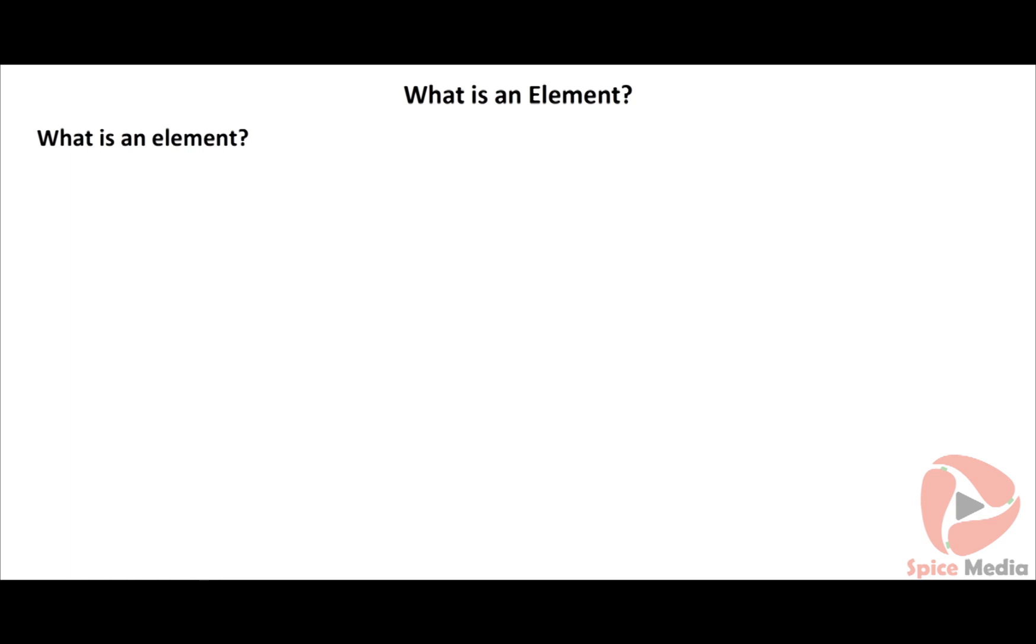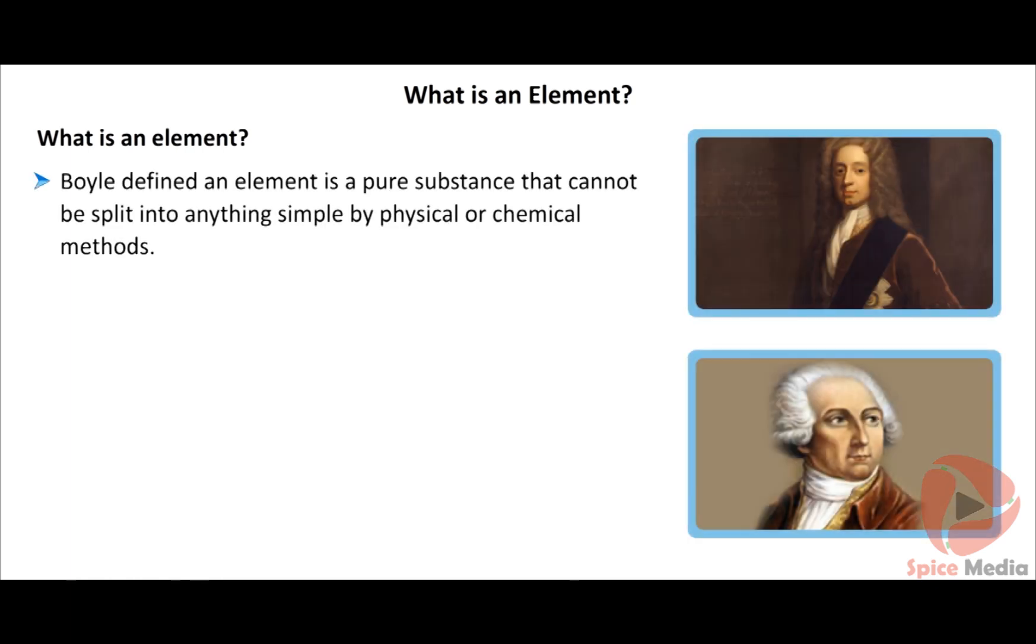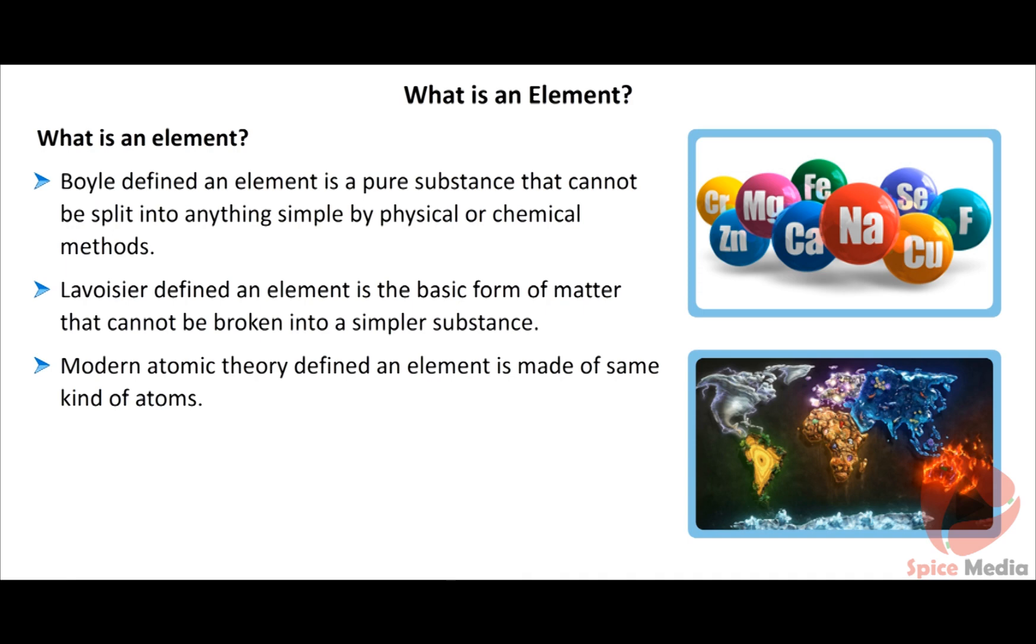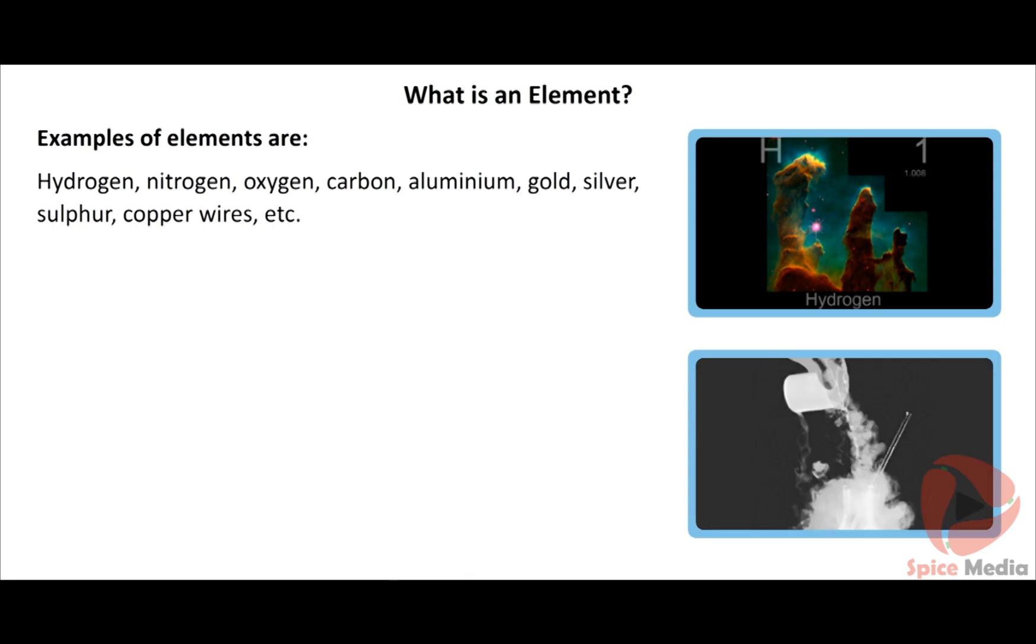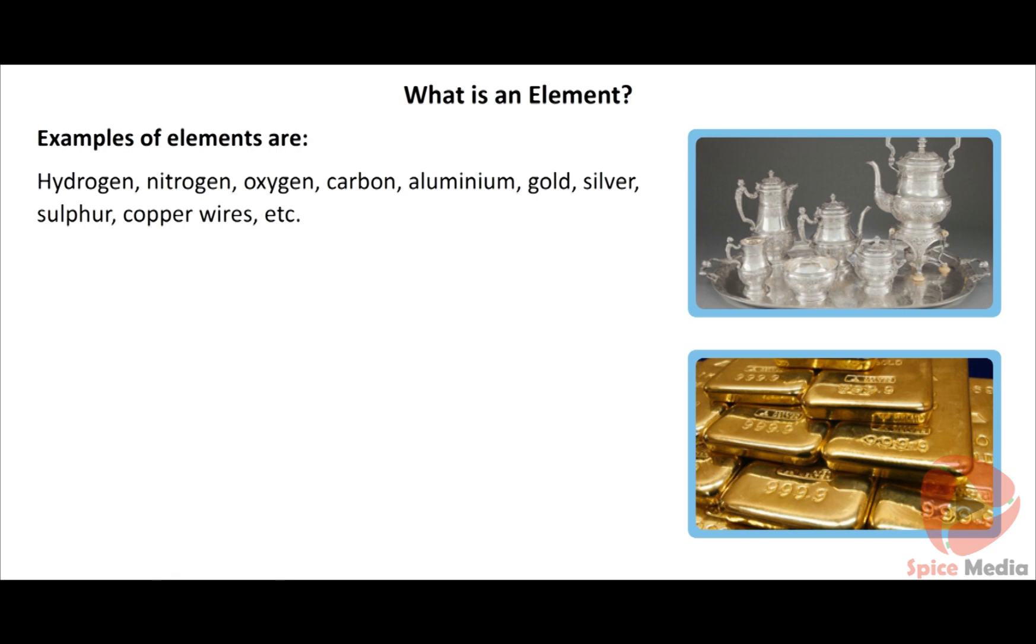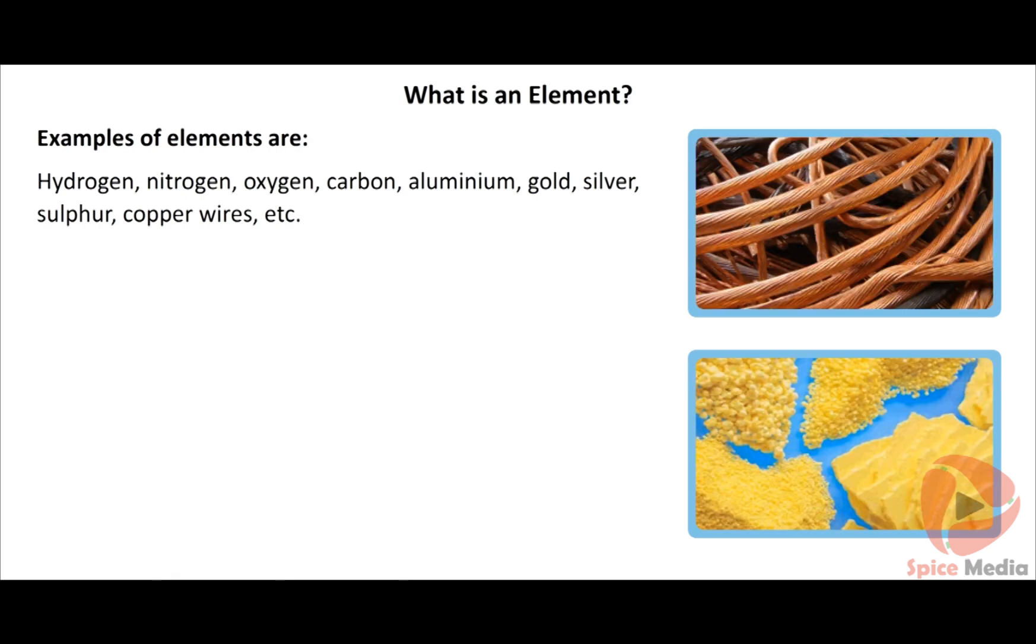What is an element? Boyle defined an element as a pure substance that cannot be split into anything simpler by physical or chemical methods. Lavoisier defined an element as the basic form of matter that cannot be broken into a simpler substance. Modern atomic theory defined an element as made of same kind of atoms. Examples of elements are hydrogen, nitrogen, oxygen, carbon, aluminium, gold, silver, sulphur, copper wires, etc. A lump of sulphur contains sulphur atoms only. Nitrogen contains atoms of nitrogen only. Copper wires contain only copper atoms.